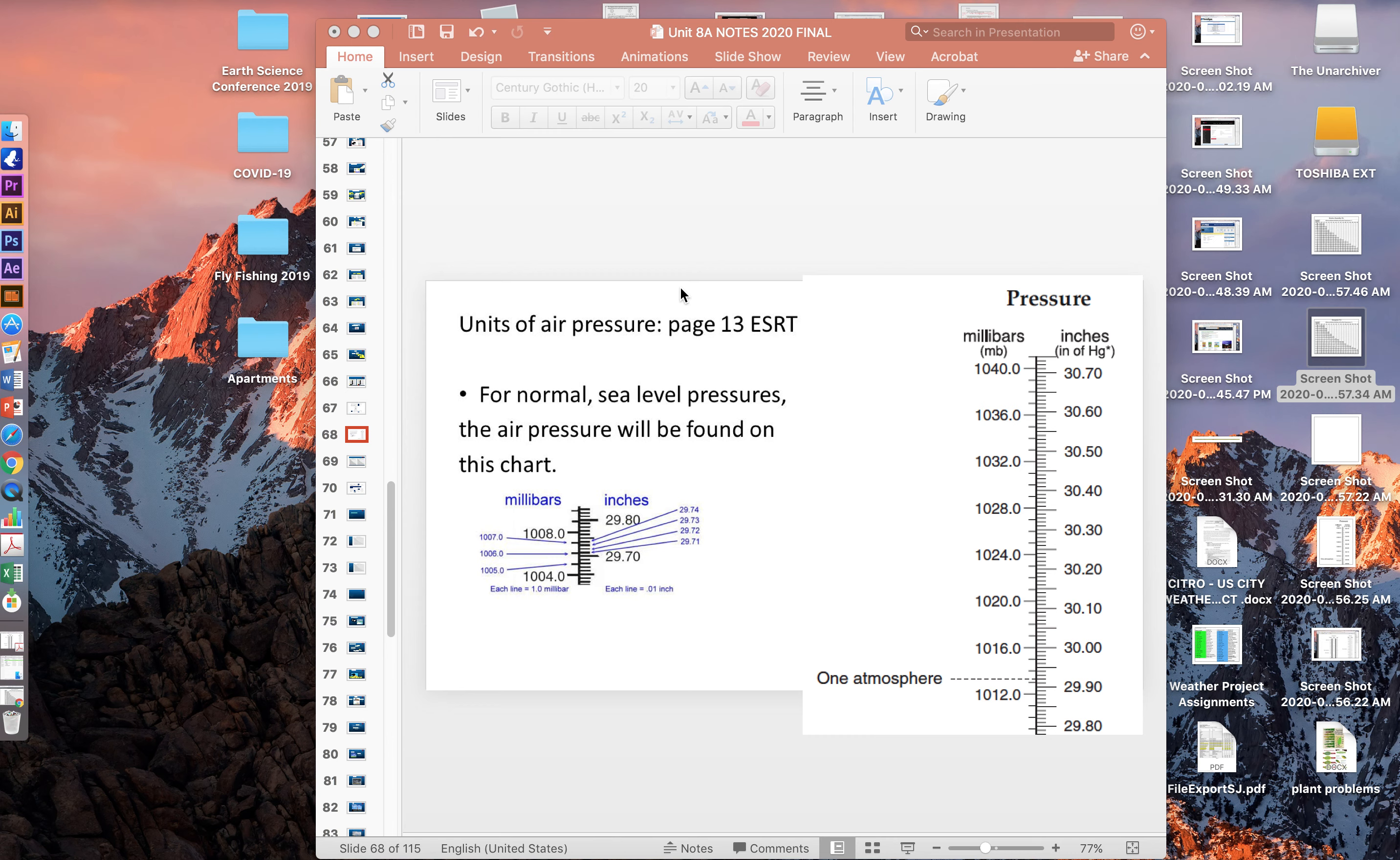And after we go over this concept, we're going to use relative humidity and dew point to look at our data that you have all been collecting and create a graph and analyze it and make conclusions about dew point, air temperature, and how it impacts the relative humidity and therefore weather.